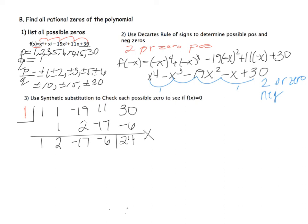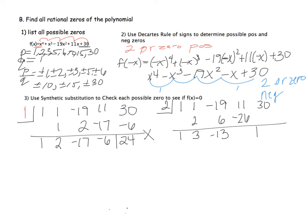Let's try 2. A lot of this is just guessing and doing the work until you find the zeros. Coefficients: 1, 1, −19, 11, 30. Bring down 1, multiply to get 2, add to get 3, multiply to get 6, add to get −13, multiply to get −26, add to get −15, multiply to get −30, add to get 0. The remainder is 0, so 2 is one of my zeros.